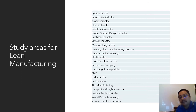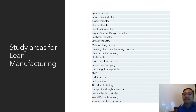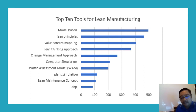The sectors include apparatus, textile, automotive industry, bakery industry, economical sector, construction sector, digital, graphic, food industry, and Java industry. Even universities have done research on lean — universities themselves want to reduce waste. This means lean is applied across all sectors.